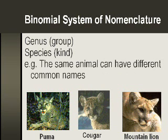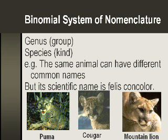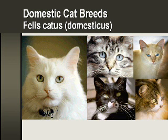The same animal can have different common names. For example, the puma might be called that in one place, cougar in another, and in California they call it a mountain lion. But they're the same animal with the same scientific name: Felis concolor — Felis being the genus and concolor being the species. Domestic cats also have the genus Felis, but instead of concolor, the species is catus — Felis catus — and these interbreed, whether a Persian cat or a Russian cat or any other.